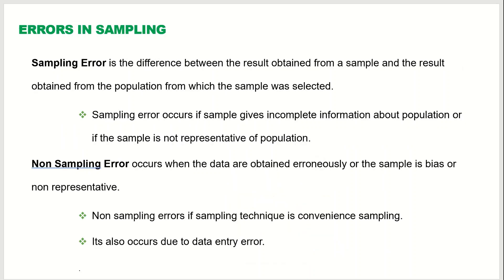We have now learned the four sampling techniques: random sampling, stratified sampling, systematic sampling, and cluster sampling. When we do this sampling, there are chances that we will have some sort of error in the sampling process. There are two types of errors.